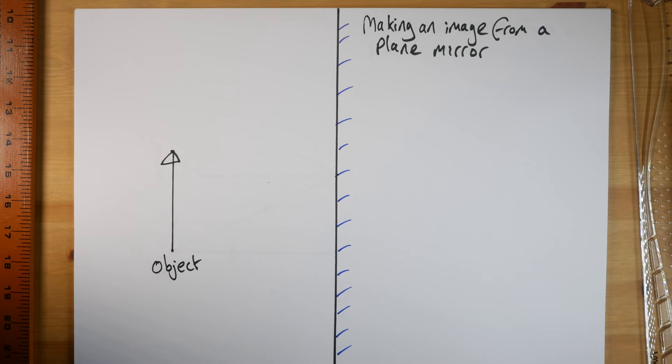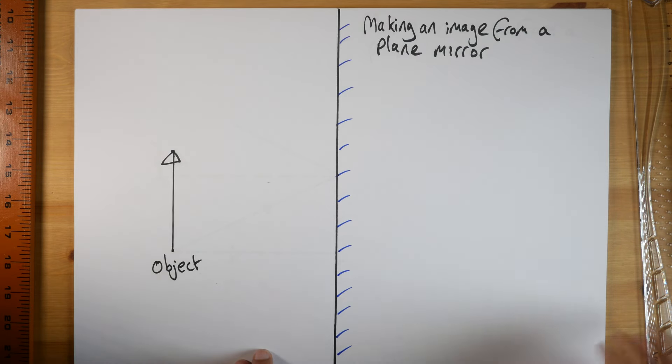Hi, welcome to Science Chomp. Today we're going to be looking at how to make a mirror image from a plane mirror. What we mean by a plane mirror is a mirror which is just a flat mirror like the one that you'd see in your bathroom or your bedroom.